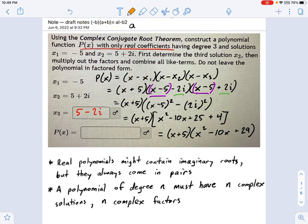Second note that's important: a polynomial of degree n must have n complex solutions and n complex factors. Now, if you look at this one, you might think, hey, n is 3, right? It's a degree 3 polynomial, but I only see two complex solutions. Well, you're not looking closely enough. All of these solutions are complex. Even negative 5 is complex.